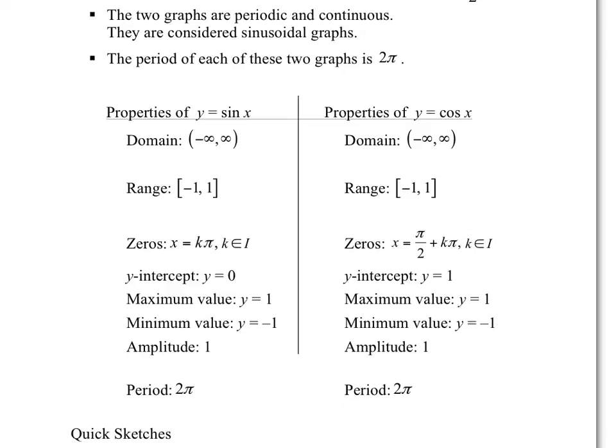The range is between negative 1 and 1, so the maximum value is 1 and the minimum value is negative 1. That has to do with the property of opposite over hypotenuse — the opposite side cannot be longer than the hypotenuse. So the ratio for sine and cosine can only be between negative 1 and 1.